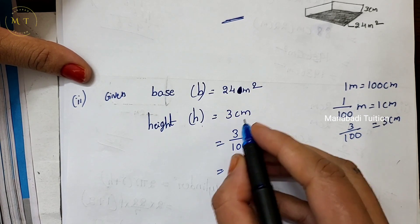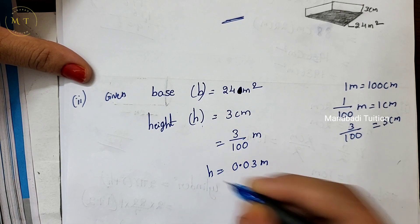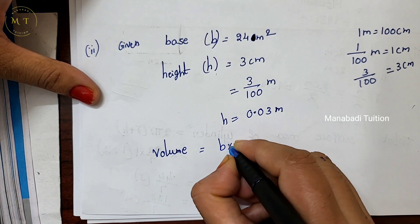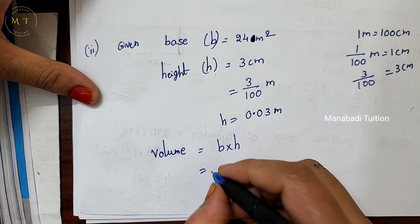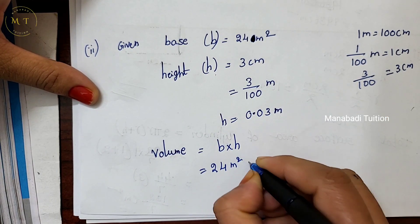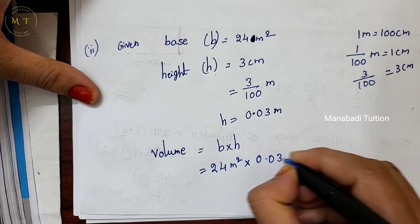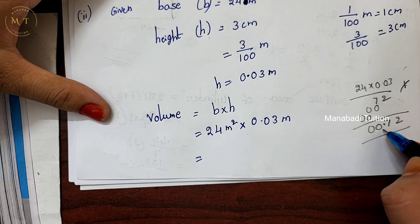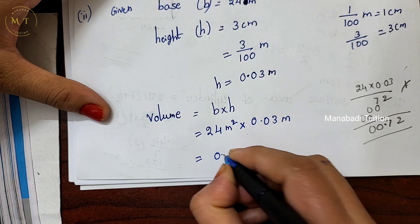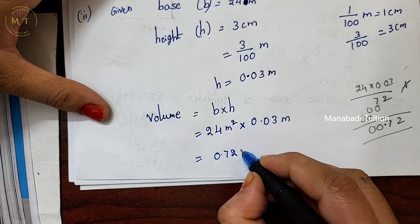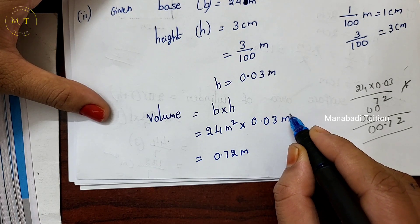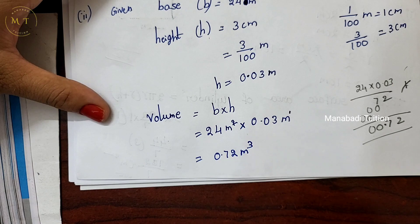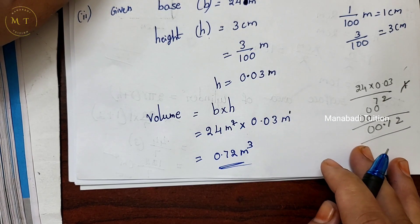So the base area is 24 square meters and the height is 0.03 meters. Multiplying, the volume is equal to 24 × 0.03 = 0.072 cubic meters.